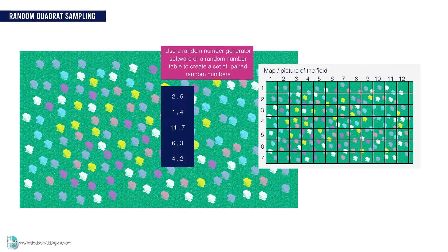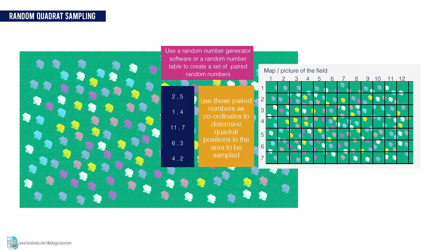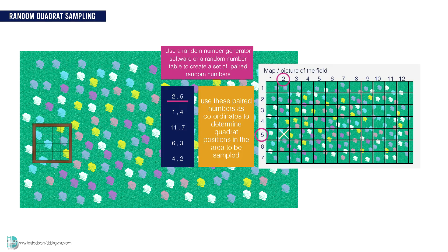The numbers are used as coordinates to determine the quadrat positions in an area to be sampled. For example, if the first random numbers I get are 2 and 5, according to the grid on the map, I should go to the southwest corner of the field for my first sampling.